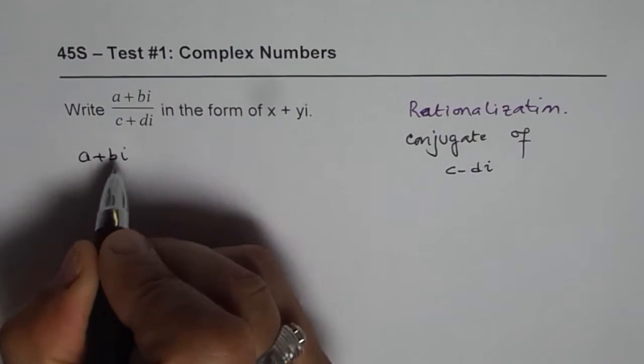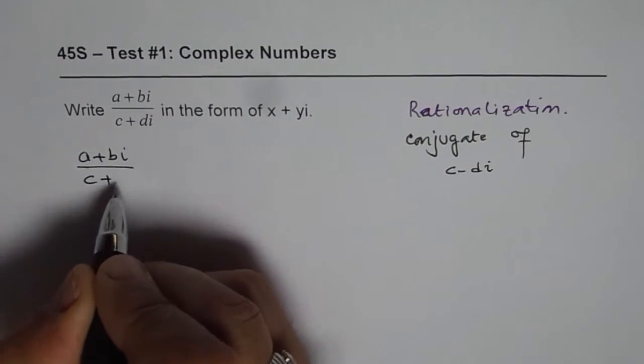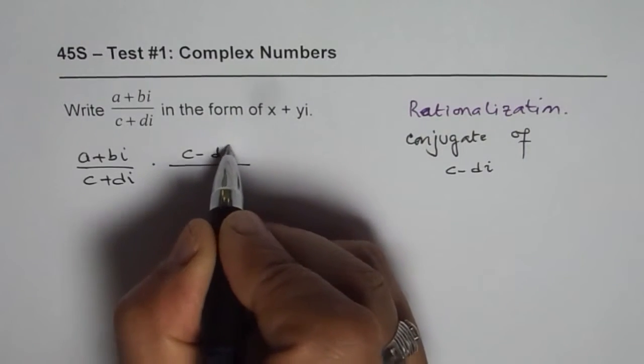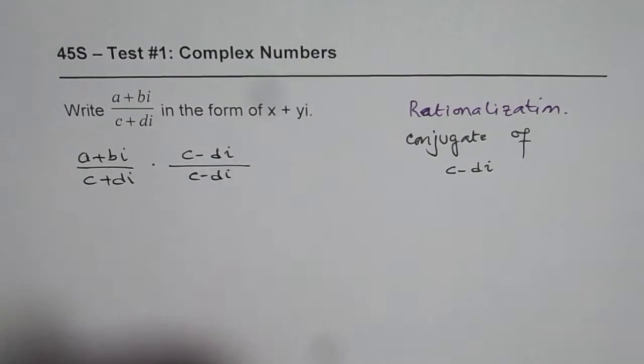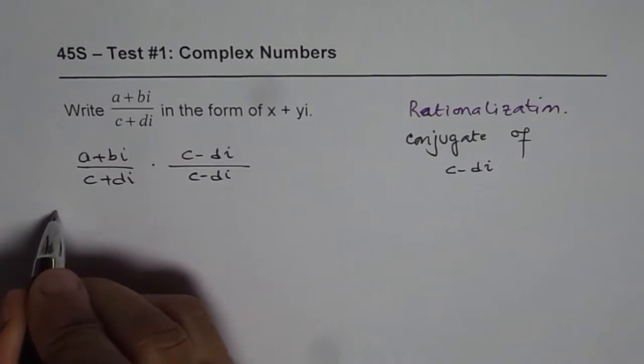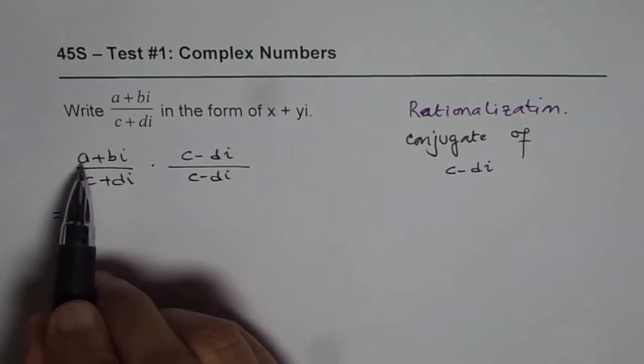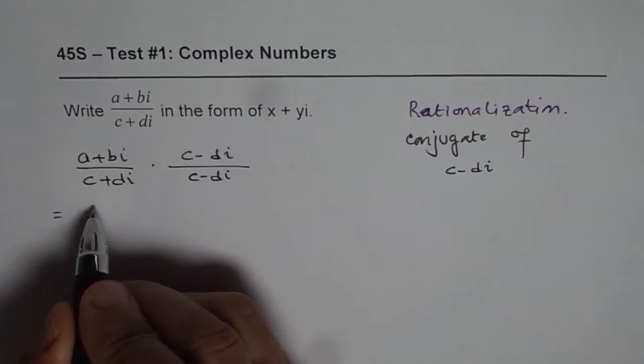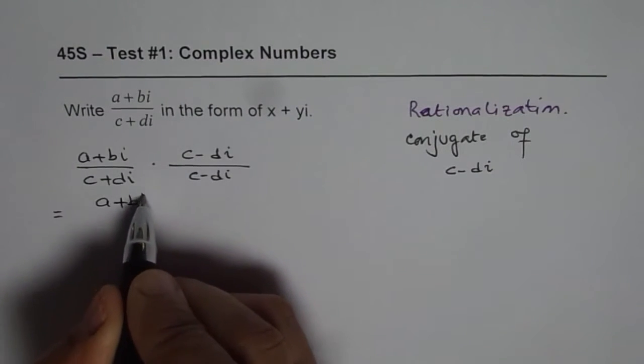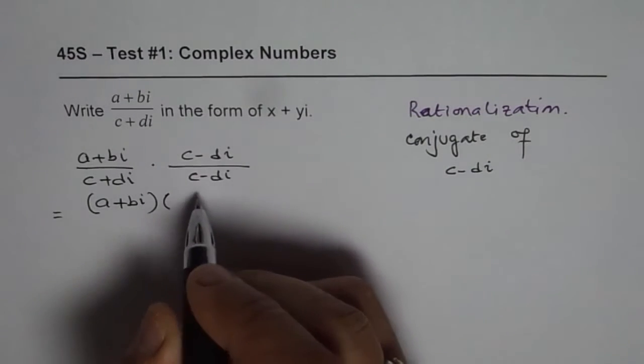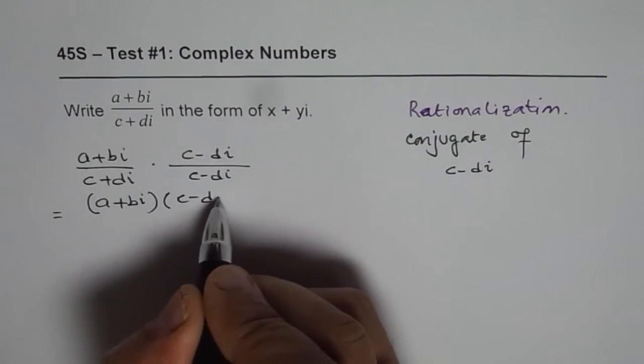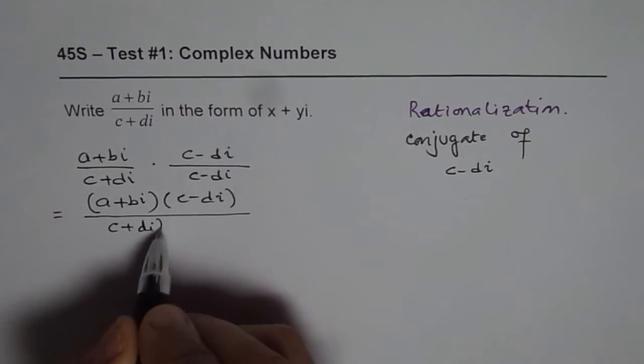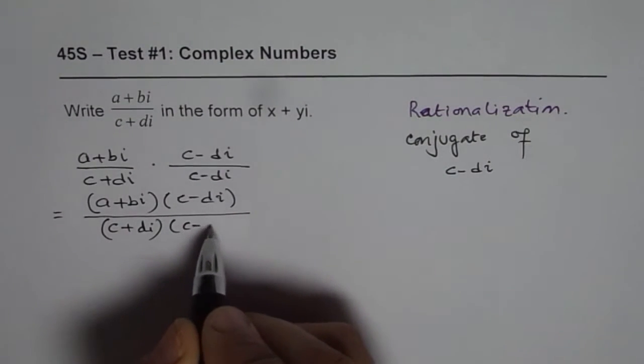So we have a plus bi over c plus di, we'll multiply and divide by c minus di. If we do that, then what we get is a plus bi times c minus di in the numerator. And in the denominator we get c plus di times c minus di.